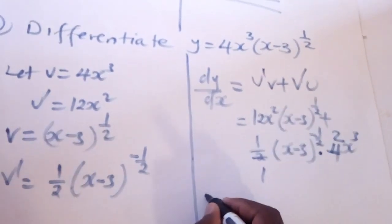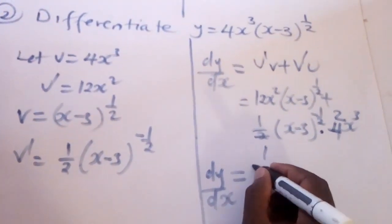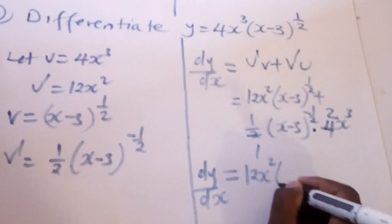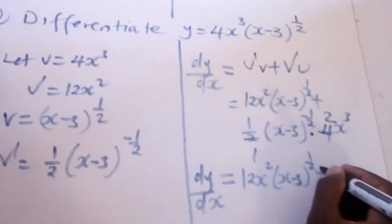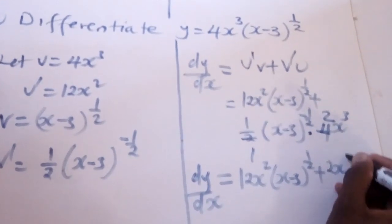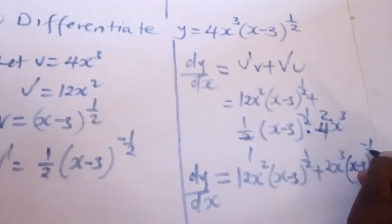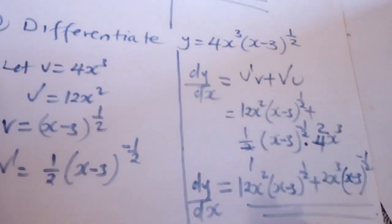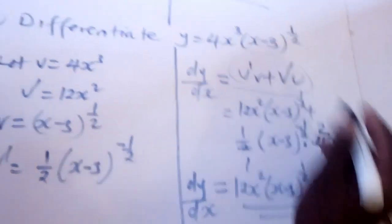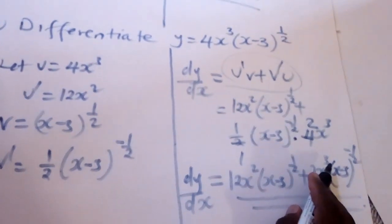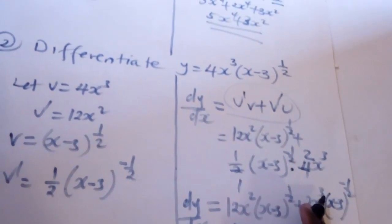So our final dy/dx is equal to 12x²(x − 3)^(1/2) + 2x³(x − 3)^(−1/2). That is the final derivative. The only thing you need to follow is the formula: u̅·v + v̅·u, where u̅ is the derivative of u and v̅ is the derivative of v.